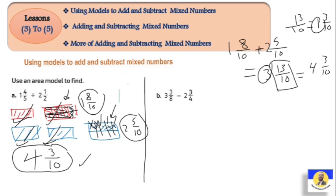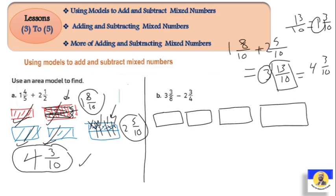Now let's do minus with models. Three and three over eight minus two and three over four. First, three and three over eight: draw one, two, three complete shapes. For three over eight, the whole shape has eight parts - number four divided into eight.